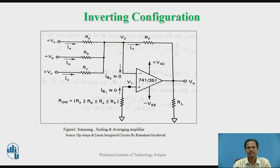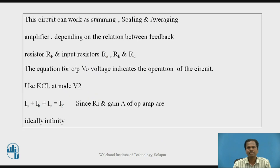The output voltage of this circuit may be the sum of the inputs, scaling of the input, or averaging of the input voltages. Let us see the summing amplifier first. This circuit can work as a summing amplifier, scaling amplifier and averaging amplifier depending on the relation between feedback resistor R-F and input resistors R-A, R-B and R-C. The equation for output voltage indicates the operation of the circuit.